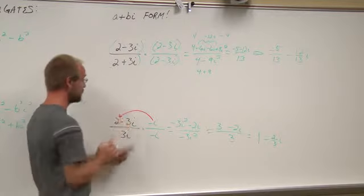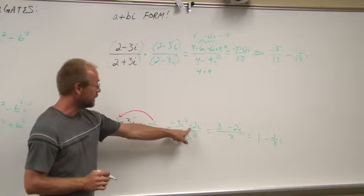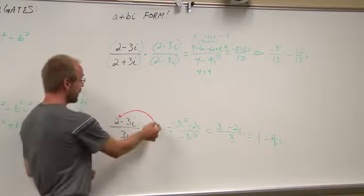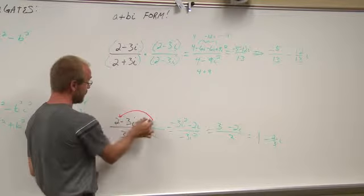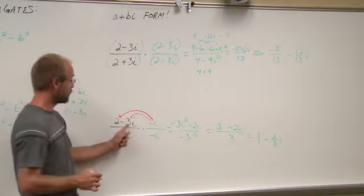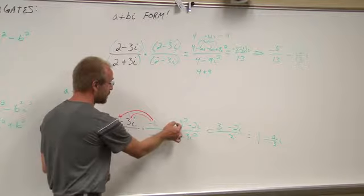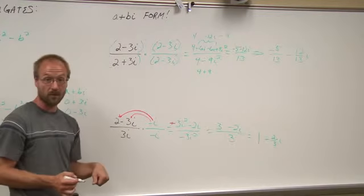When I distributed this, negative i times 2, negative 2i. Negative i times negative 3i, well, a negative times a negative is a positive. So you can see my sign error there, right?